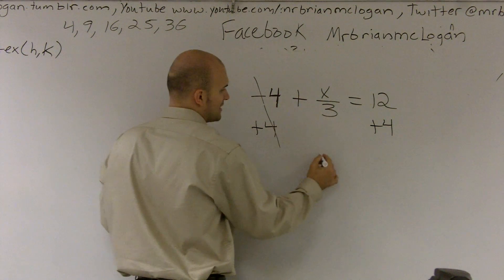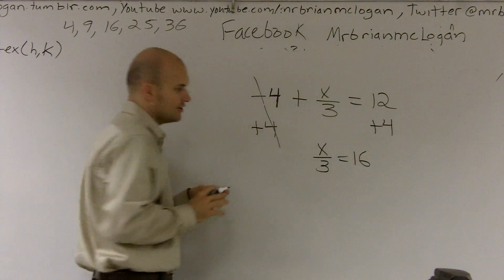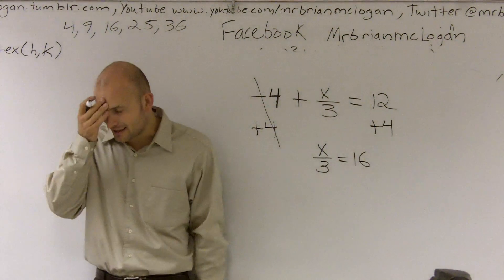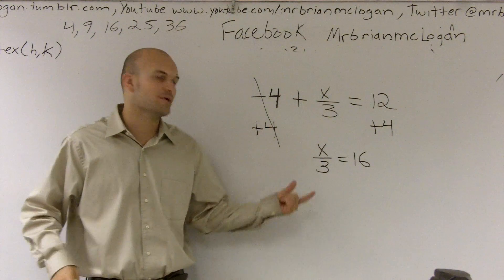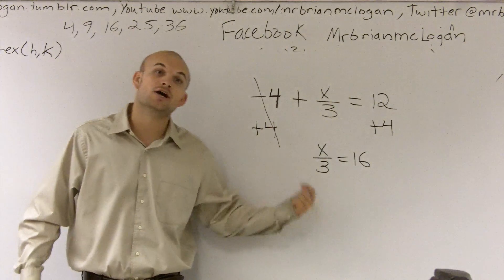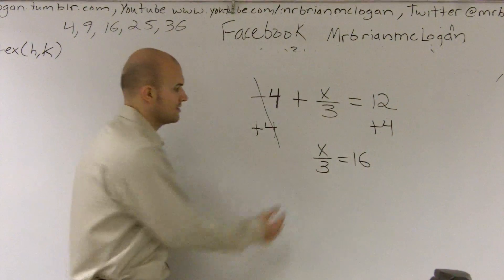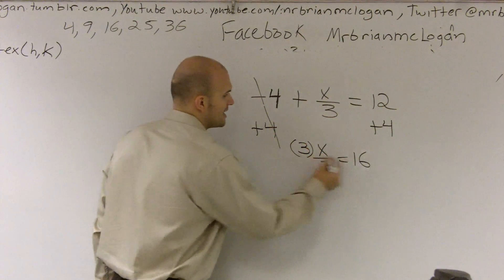That becomes zero. So, you're left with x over 3 equals 16. I know a lot of you freak out when you're looking at this. You're like, God, I hate fractions. Just remember, all it's saying is x is being divided by 3. So, to undo x being divided by 3, the inverse operation would be to multiply. So, you just multiply by 3 on both sides.